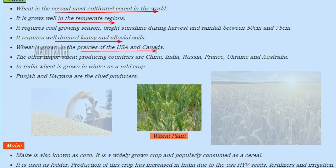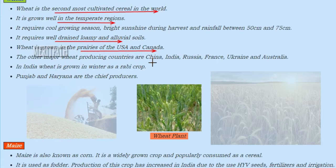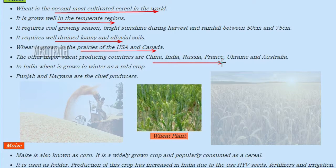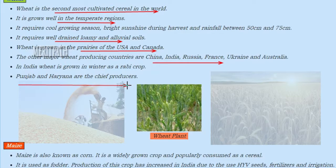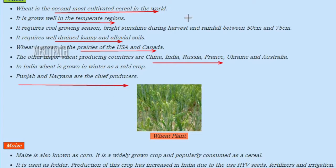Wheat is grown in the prairies of USA and Canada. The other major wheat producing countries are China, India, Russia, France, Ukraine, and Australia. Wheat is majorly grown during the winter season in India. Punjab and Haryana are the chief producers of wheat in India.